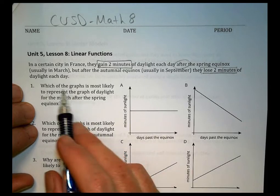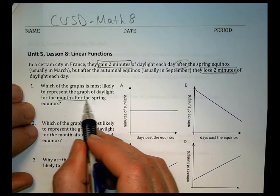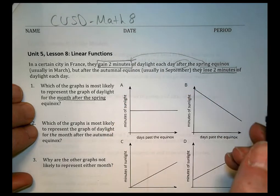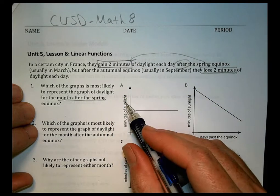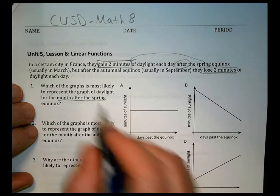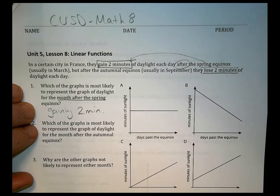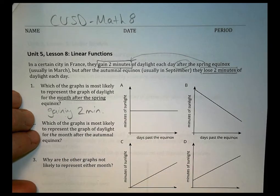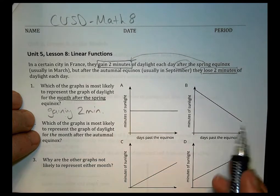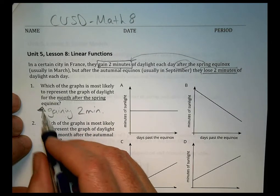Let's see what we have here. Which of the graphs is most likely to represent the graph of daylight for the month after the spring equinox? So remember in the spring, we're gaining daylight time. We can see all these have minutes of sunlight and days past the equinox. Because we're going to be gaining two minutes, we want to look for a graph that's going to indicate that we're gaining two minutes of time. There should be some sort of increase with time from where we're starting from.